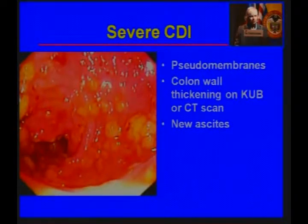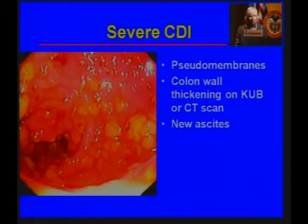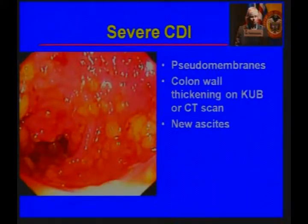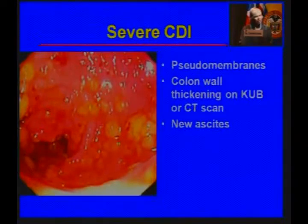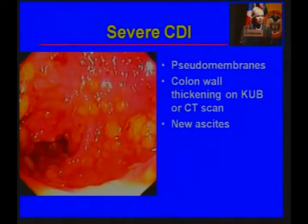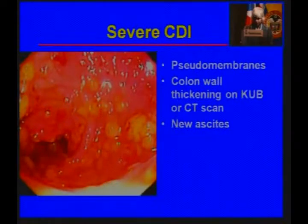Those of you who have done colonoscopy may have seen these typical pseudomembranes with creamy yellow-white plaques — this is a sign of severe disease, pseudomembranous colitis. But if you see colon wall thickening on a flat plate of the abdomen or on a CT scan, that's also an indication of severe disease. Or if the patient has new development of ascites, that can be a side effect of C. difficile as well.